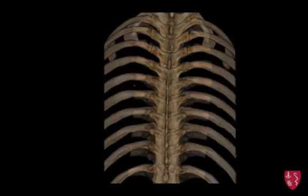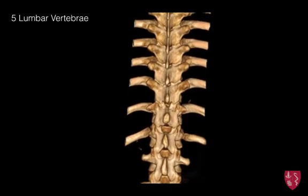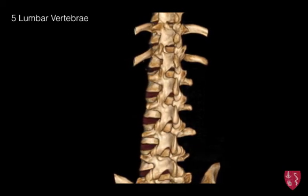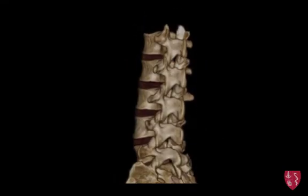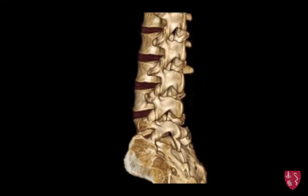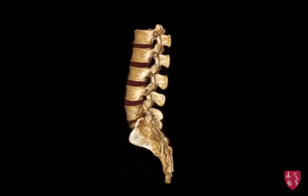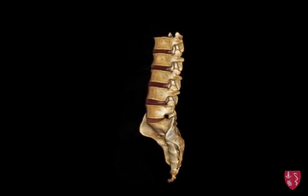The last vertebra we will investigate in this video are the five lumbar vertebra. We see that these vertebral bodies increase in size even more than the thoracic, as this region is responsible for transmitting motion and weight from the lower limbs up to the abdominal and thoracic cavities.